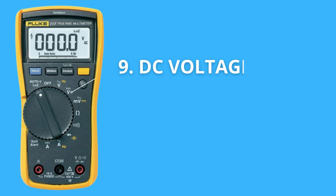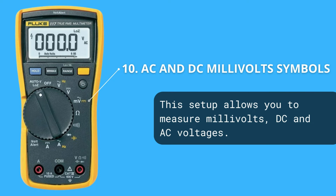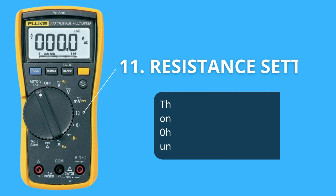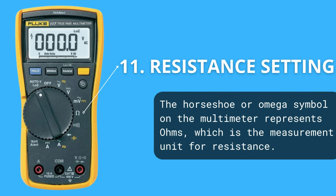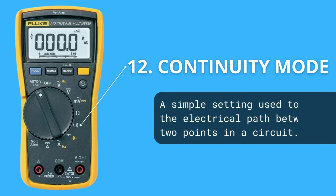This symbol allows you to measure AC voltage and hertz. AC voltage measurement symbol. Same symbol for measuring AC voltage, but in millivolts. The omega symbol is used to measure resistance and is measured in ohms. Continuity symbol, used to test the connectivity of electrical components.